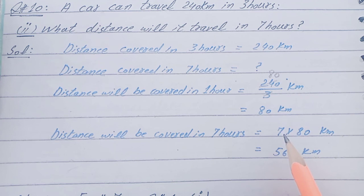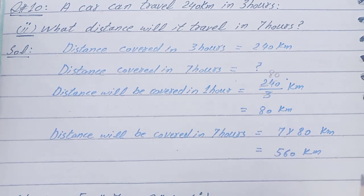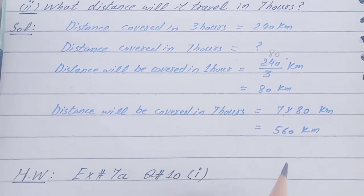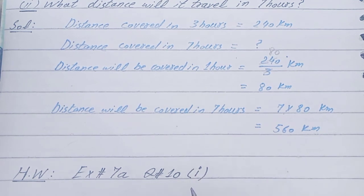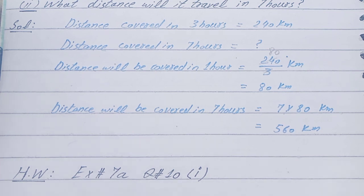So we find the distance covered in seven hours: 7 multiplied by 80. Seven times 80 equals 560 kilometers — that is the answer. The first part of question number 10 is homework; you will do it and send it to me on WhatsApp or Google Classroom. Thank you all.